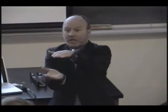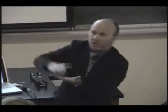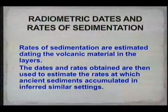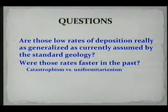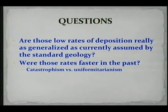Any fossil of this thickness would take hundreds or thousands of years to be covered — that is the underlying assumption based on actualistic studies in modern times. The dates and rates obtained are then used to estimate rates at which ancient sediments accumulated. The question is: are those low rates of deposition, both in modern and past times, really as generalized as currently assumed by standard geology, or were those rates faster in the past?